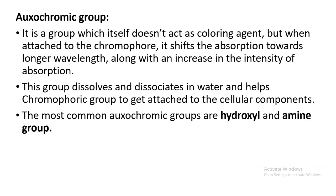The auxochromic group consists of atoms attached to the chromophore that modify its ability to absorb light. These groups themselves fail to produce color, but when attached to the chromophore they increase the intensity of the color of the chromogen. The most common auxochromic groups are the hydroxyl group and the amine group. They dissolve and dissociate in water, helping the chromophore group become attached to the cellular component.